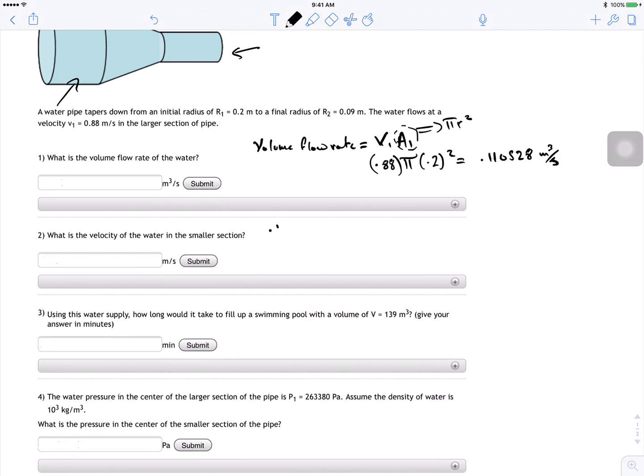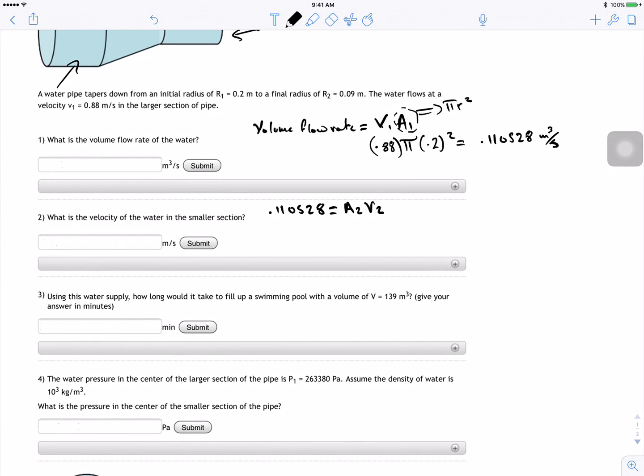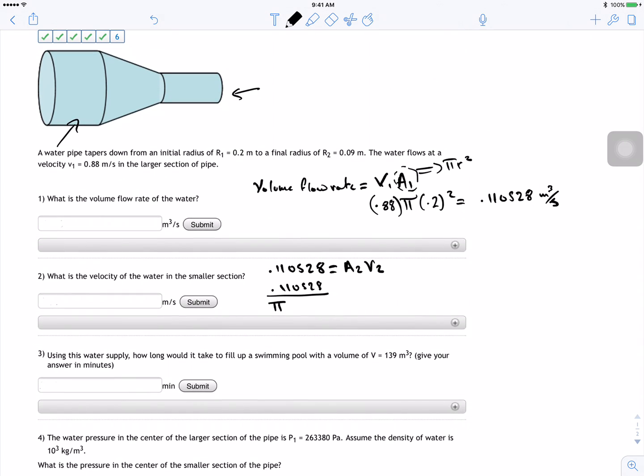So what we can do is we can do 0.110528 is equal to A2V2. Okay, so that's 0.110528 divided by the area, which is π, and then the area in this case is R2, which is 0.09 squared.